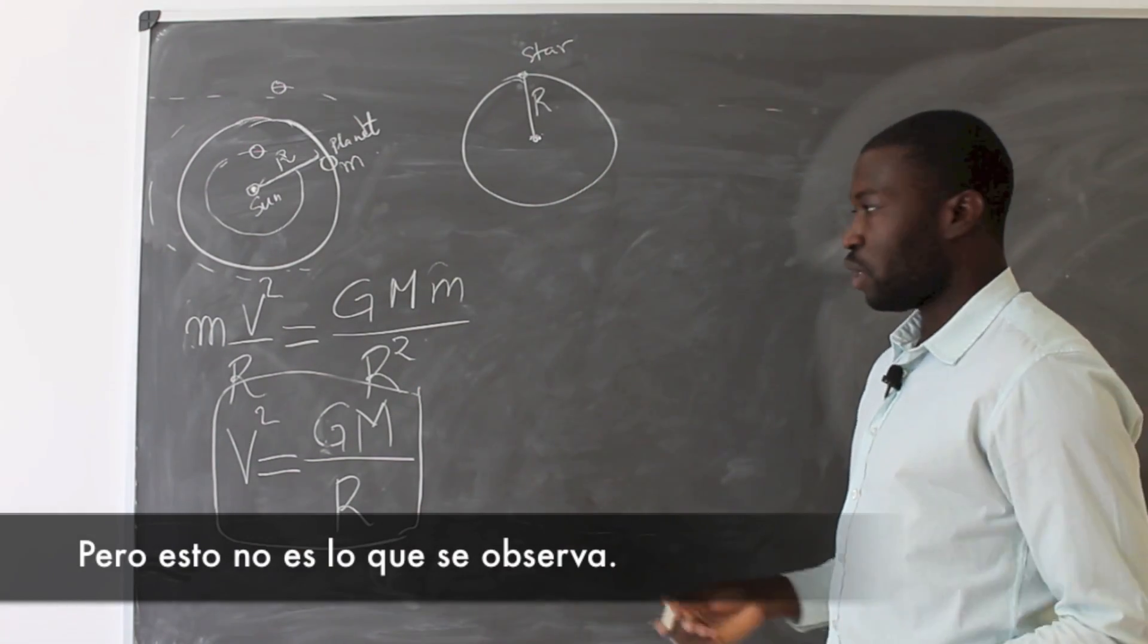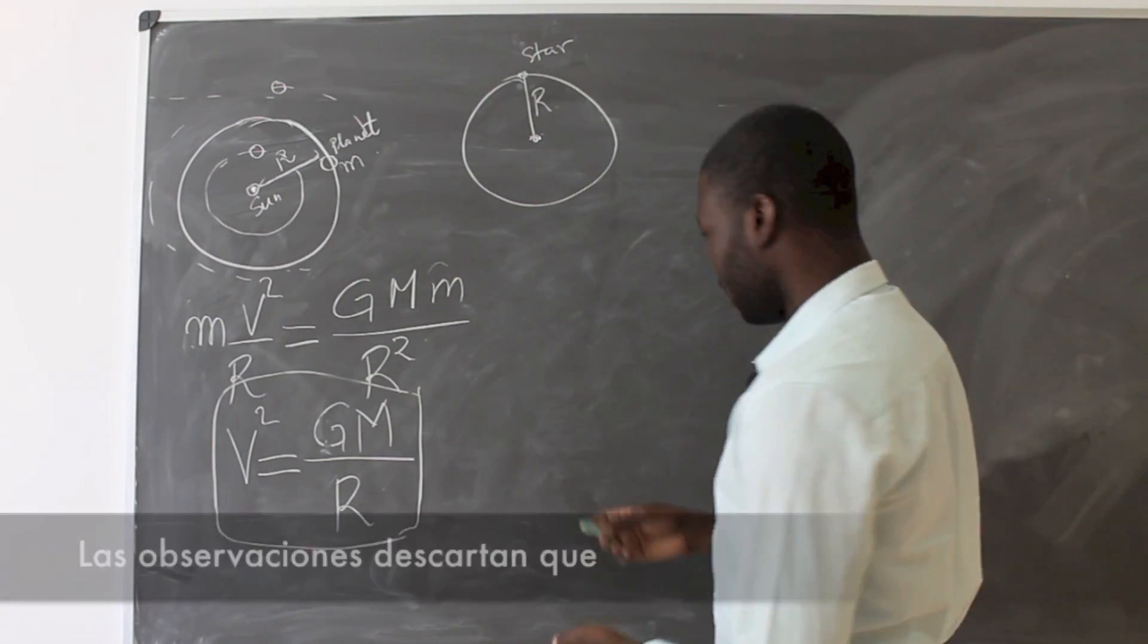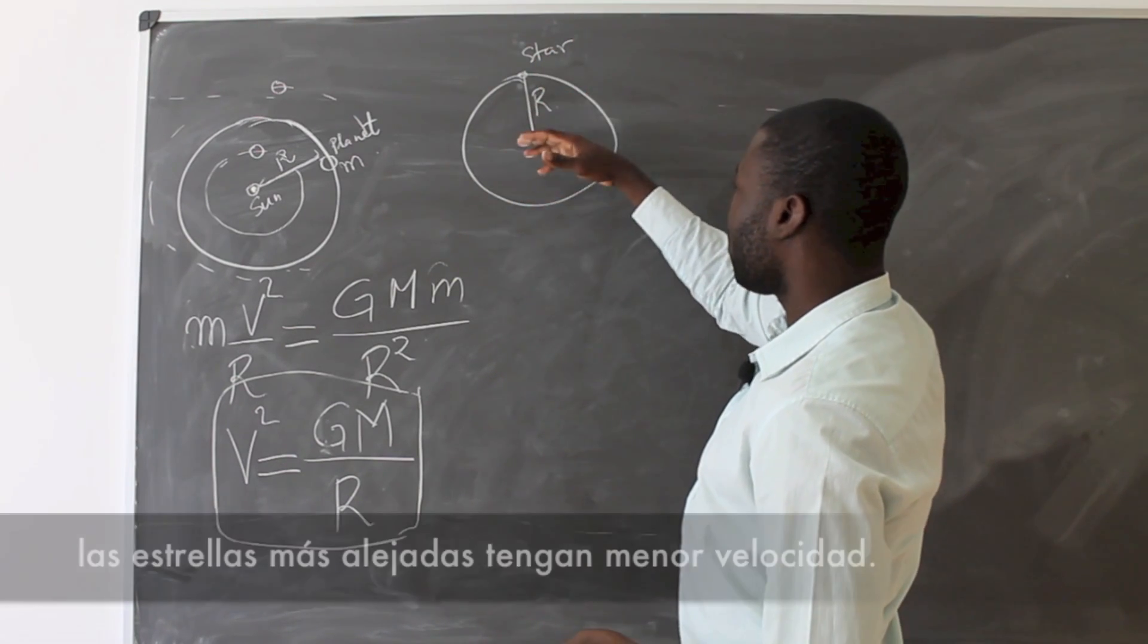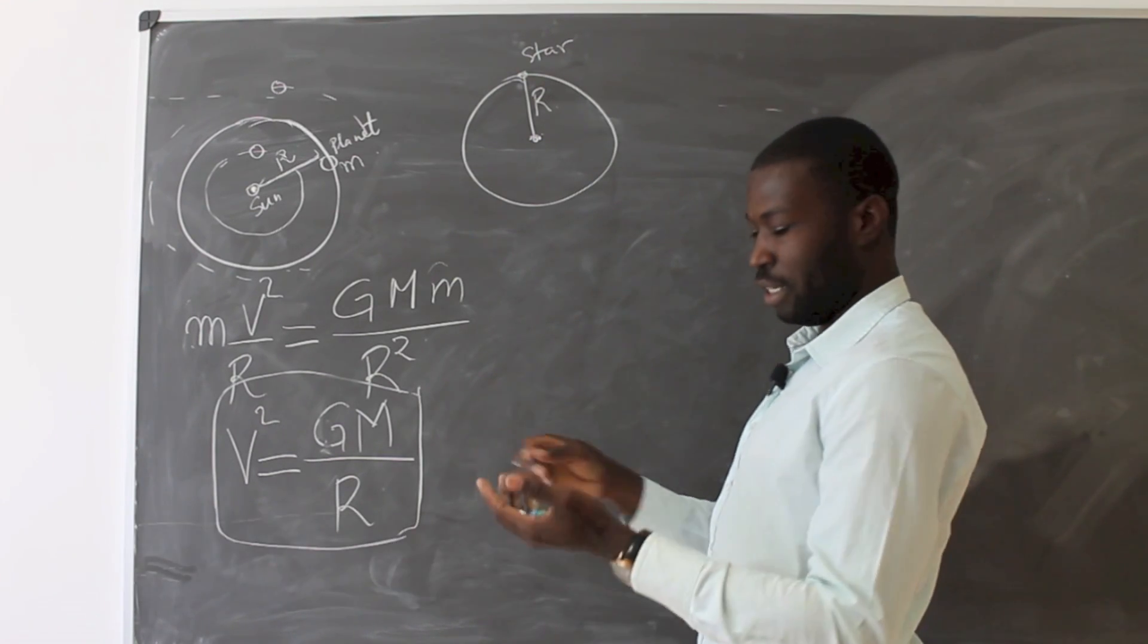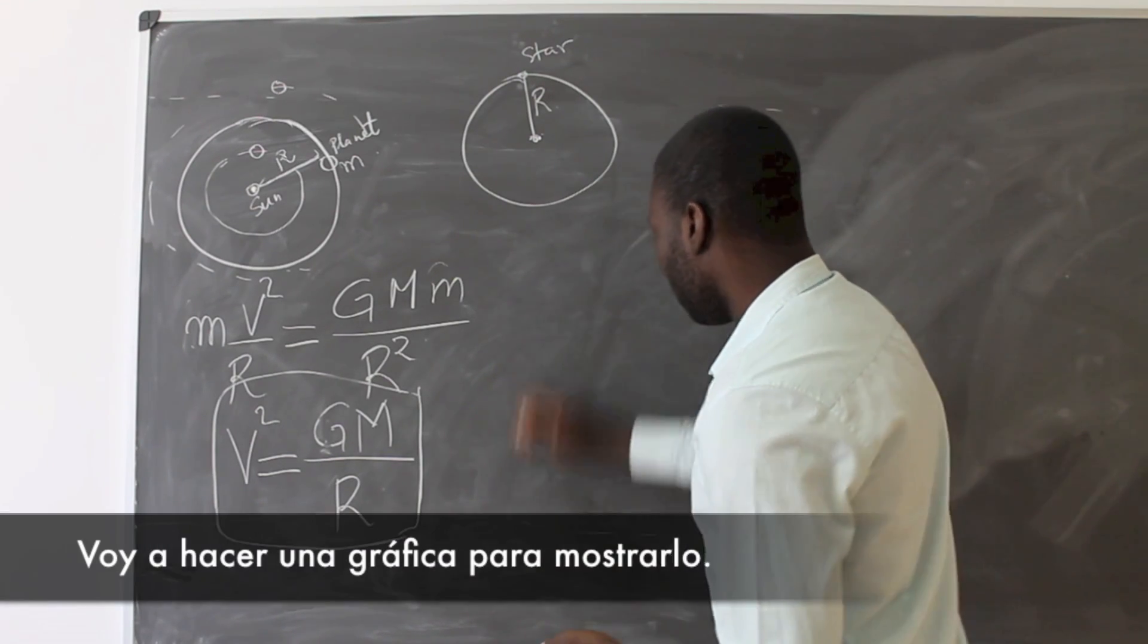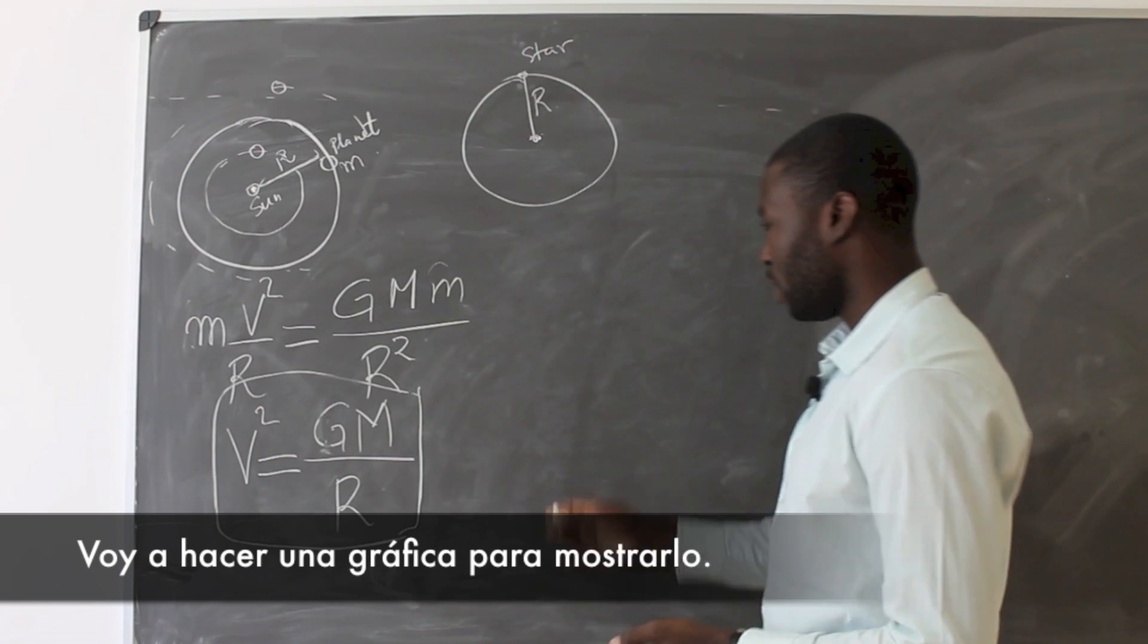But this is not what has been observed. What has been observed is that as the star is far away from the center of the galaxy, its orbital velocity decreases. I'm going to make a plot here to show clearly what I mean.